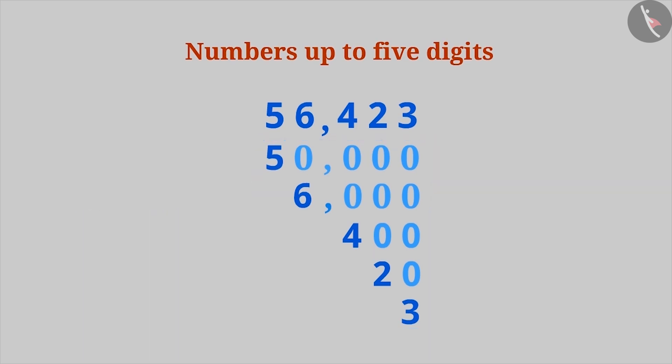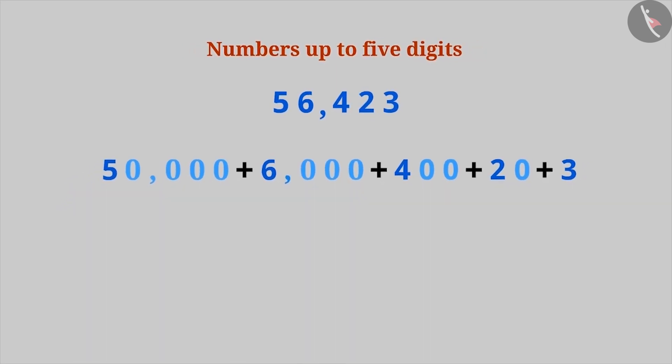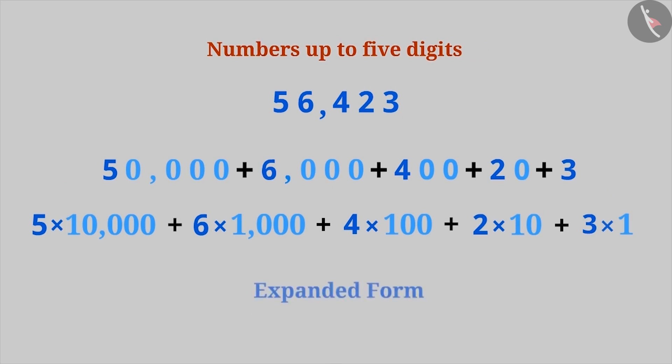The number can be expressed as the sum of the place values of the digits. These numbers can also be expanded in this way. This is called the expanded form of a number. In this way, we expand the number to show the value of each of its digits.